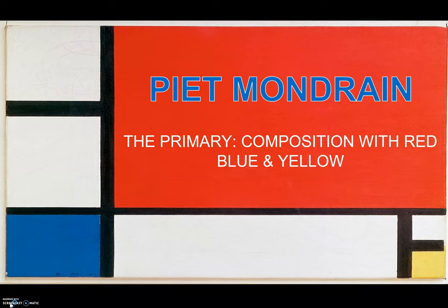Hi, it's Ms. Campos. Today's lesson is about primary colors. We will be looking at the artist Piet Mondrian and we will be creating a composition using those primary colors: red, blue, and yellow.